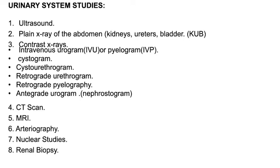So what kind of studies can we request for the urogenital system? The first is ultrasound. Ultrasound is the most important study in this case — remember it is cheaper and easier to do, and you can get your answer in just 30 minutes before your request. So first, ultrasound.